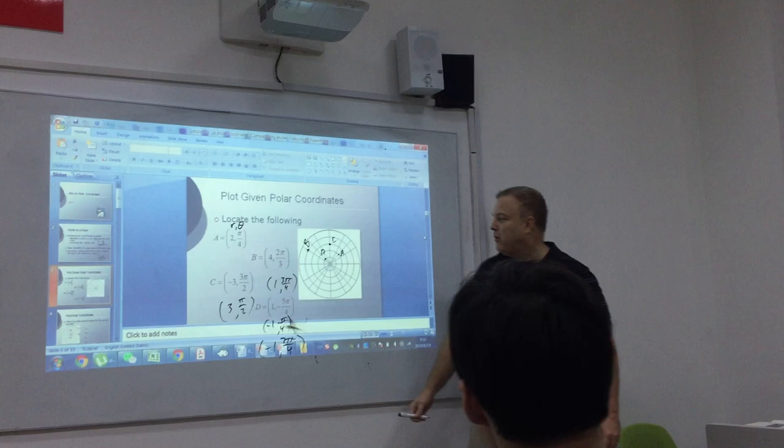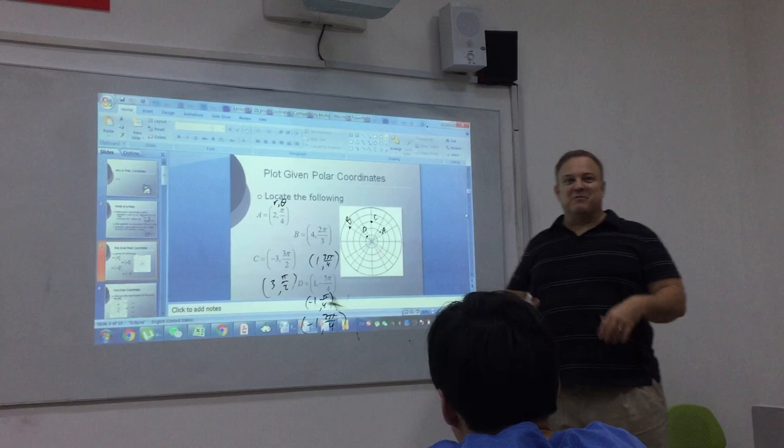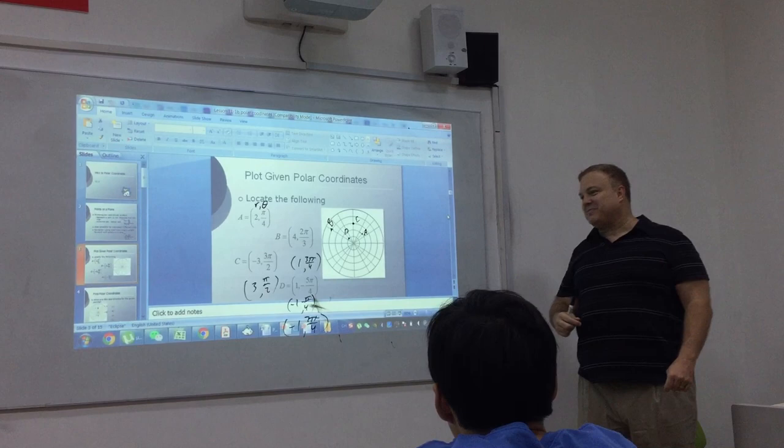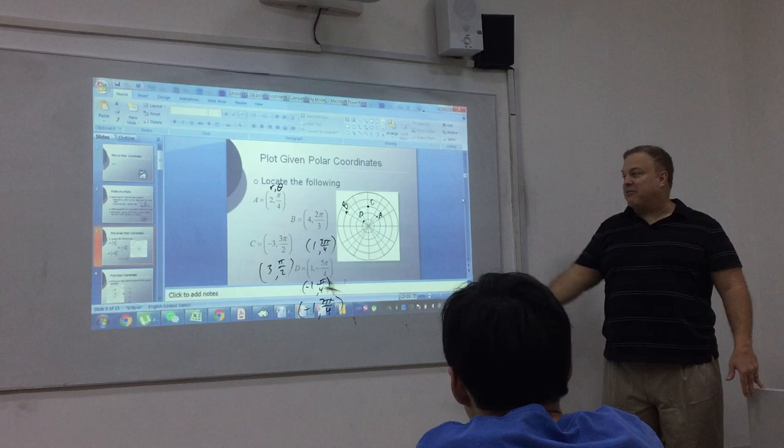So, notice point D, I actually showed it four different ways. Positive R, positive theta, negative R with a positive theta, positive R with a negative theta, and then negative R and a negative theta.